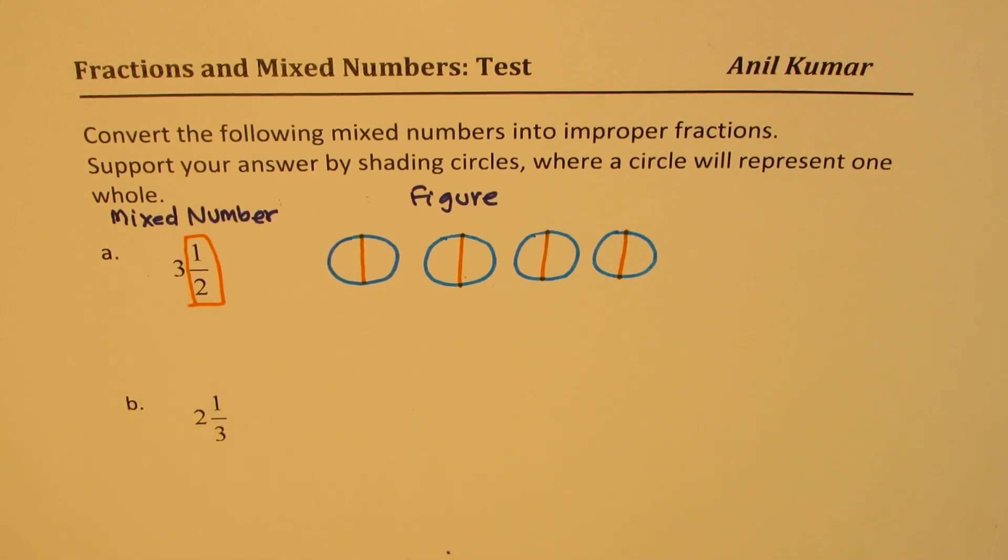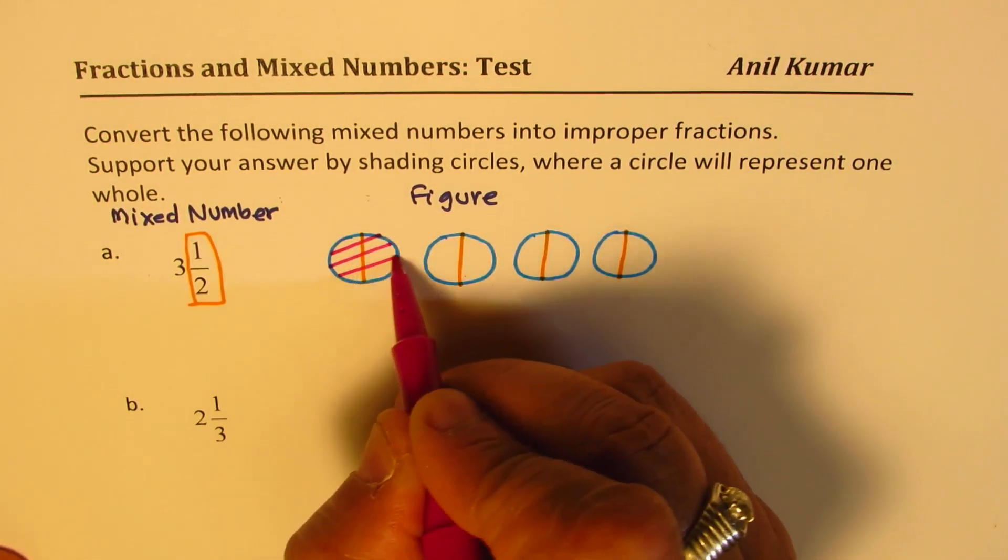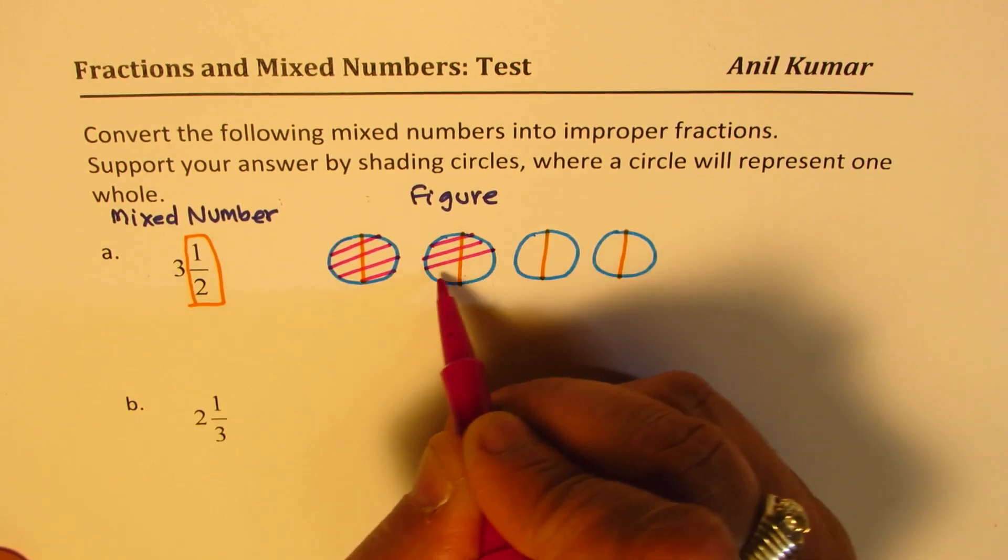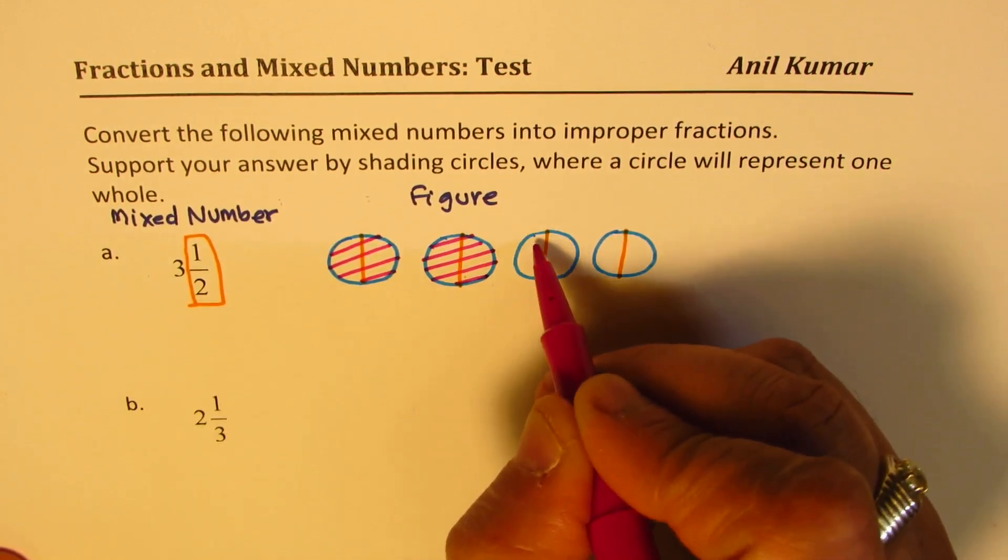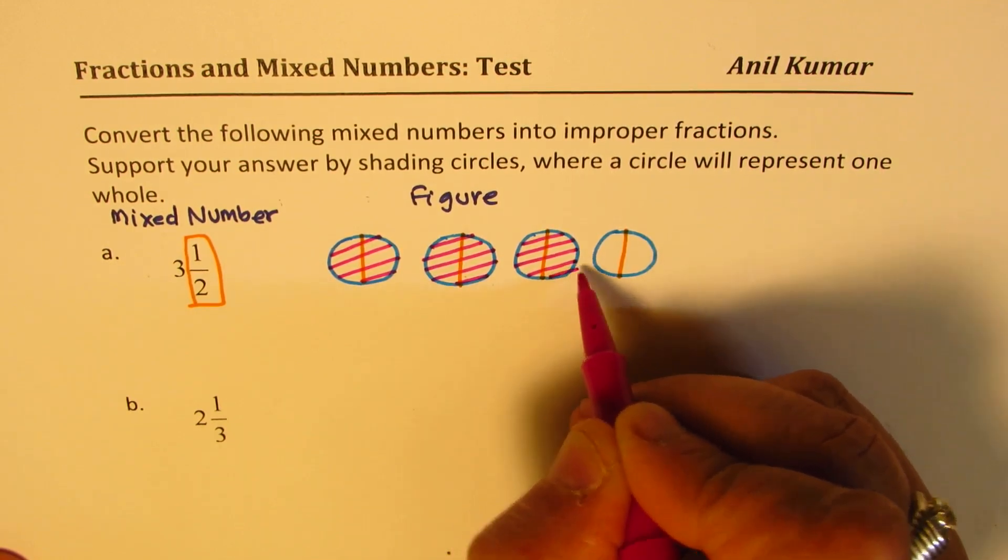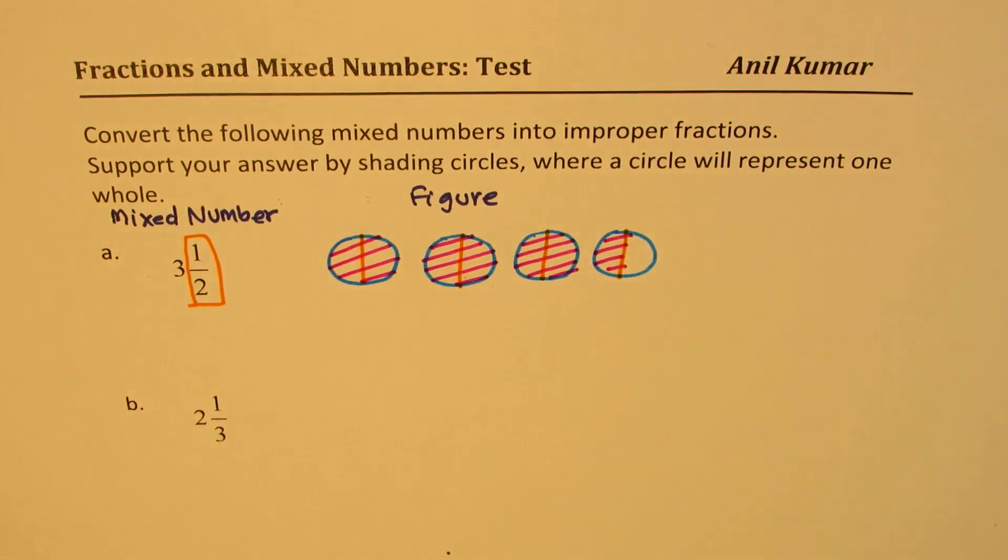Now let's try to shade 3½. That means three whole: one whole, two whole, three whole, and a half. So that is 3½.